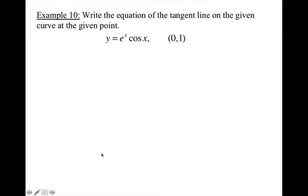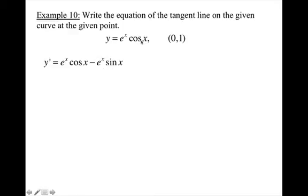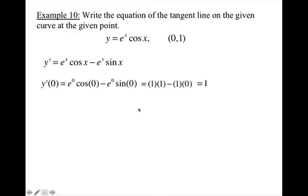Now we're going to write the equation of a tangent line on the given curve at the given point. When you want the equation of a tangent line, you need the slope, which means take the derivative. I'm going to have to use the product rule. Derivative of e to the x is e to the x times the second, minus the first times the derivative of the second, which is cosine — it became minus because the derivative of cosine is negative sine. Now find the slope by plugging in 0 for x: e to the 0 is 1, cosine 0 is 1, sine 0 is 0, so the slope is 1. I already have my point, so I can write the equation.